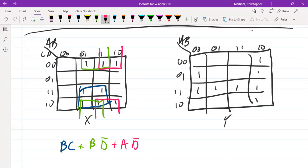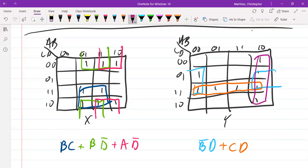Let's see about Y. Well Y I have a group of four that extends across and wraps around. That gives me B bar D. Then I'm going to have an orange. I can have a group of four for that row. Well that would be C D. And then last in purple I have this entire column and that column is A B bar. So right now I have no sharing of any types of terms.